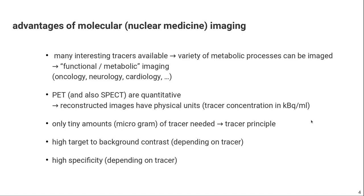Another advantage is that we need only tiny amounts of tracer to inject — usually in the range of micrograms, or a few hundred megabecquerels in terms of activity. This is nice because we don't want to inject too much dose into the patient, and it's also important to respect the tracer principle: injecting too much of our molecule of interest would change the metabolism, which we don't want. This is different from contrast agents in MRI or CT, where you really have to inject much more — half a gram or grams — which would change the metabolism.